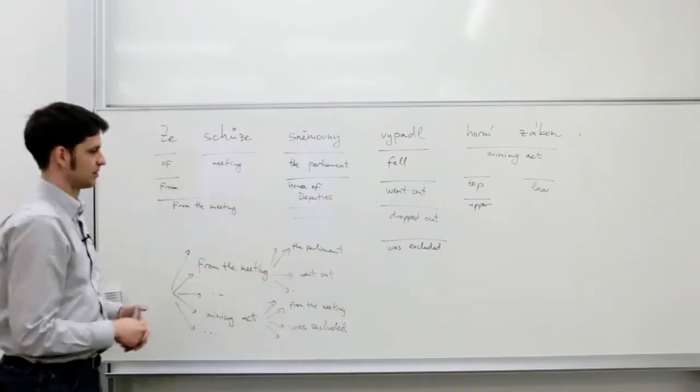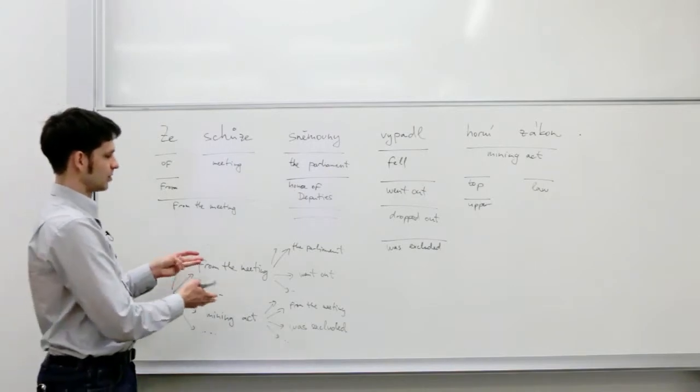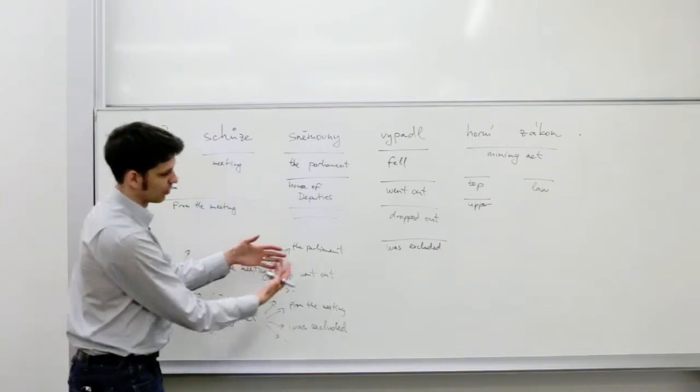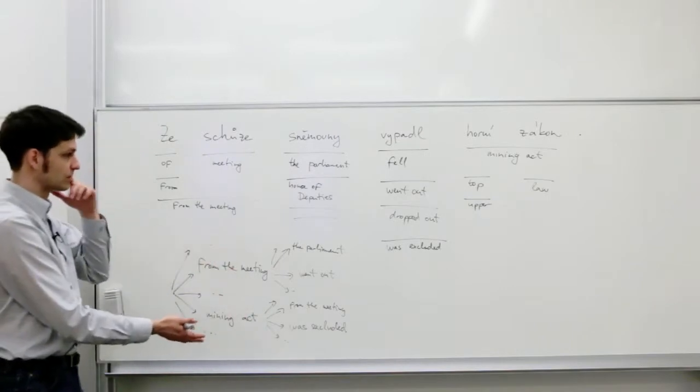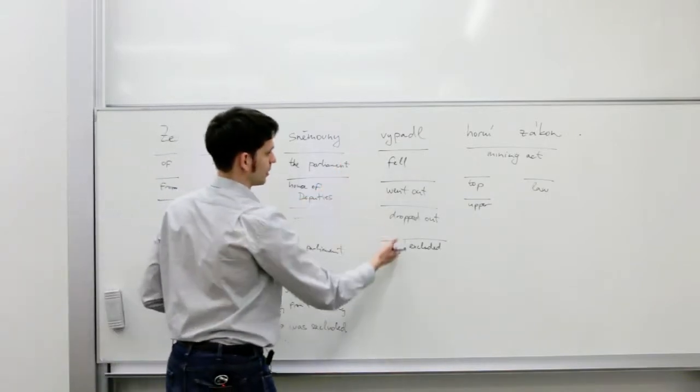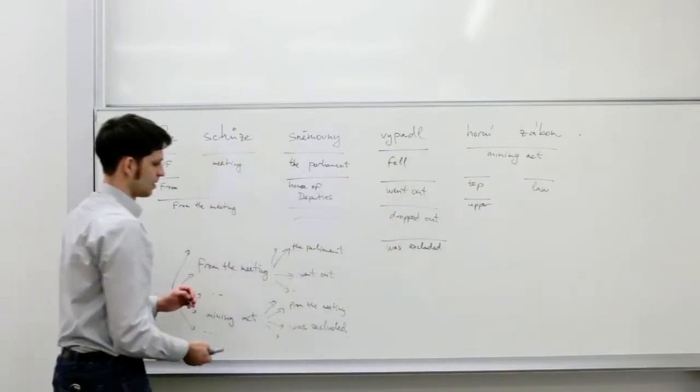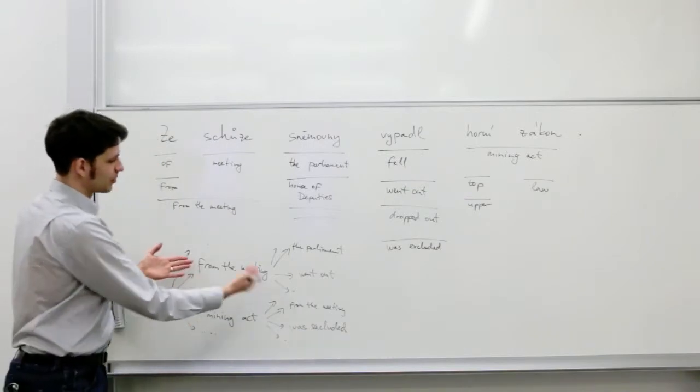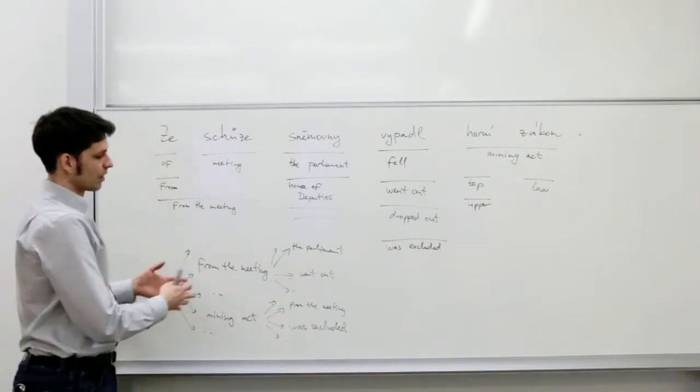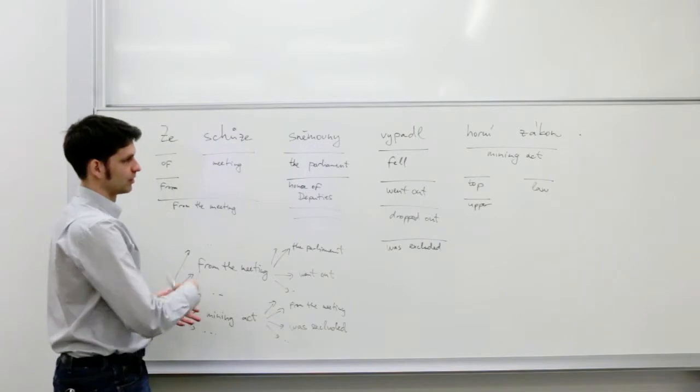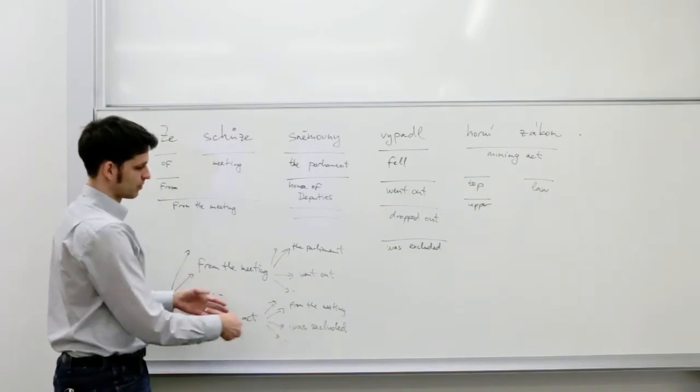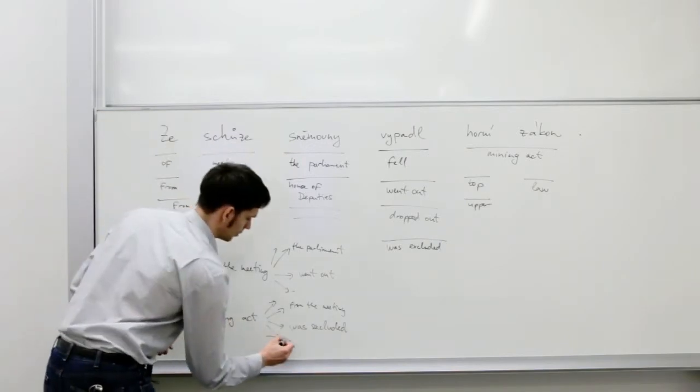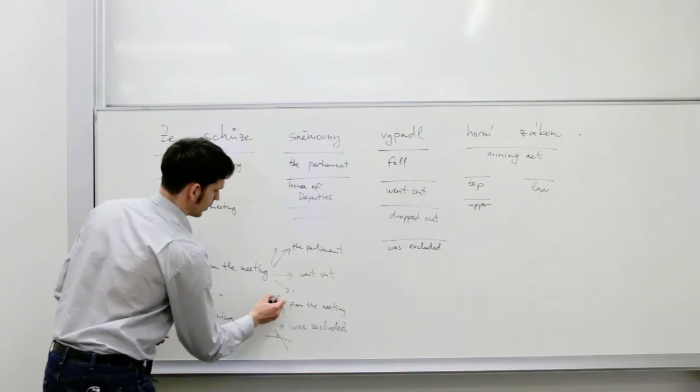As you see, the search space, the space of all possible hypotheses, is extremely large because of the large number of choices that we have for each input span and also because of the many possible reorderings. So we cannot afford to search through this whole space unless promising hypotheses are pruned and never explored any further.